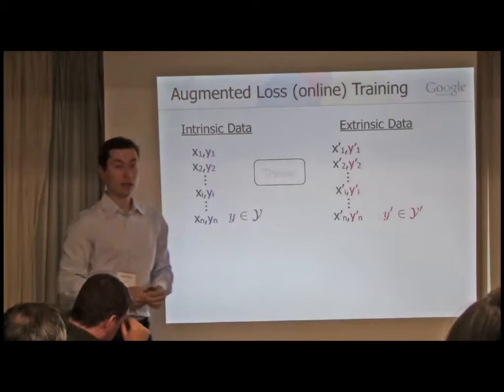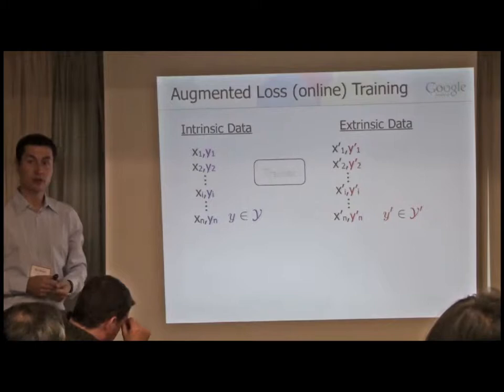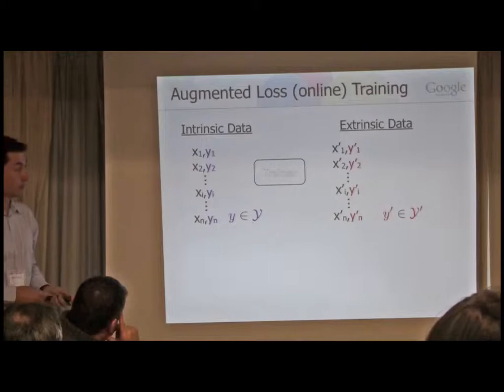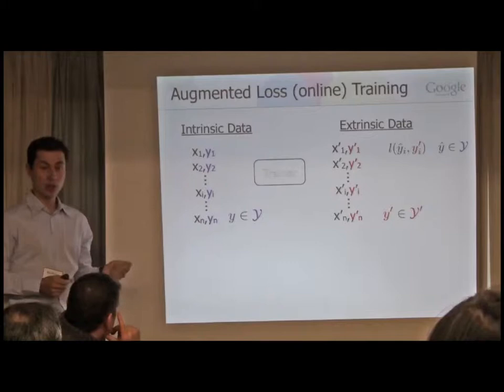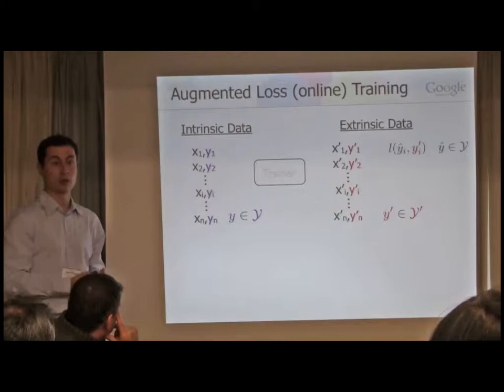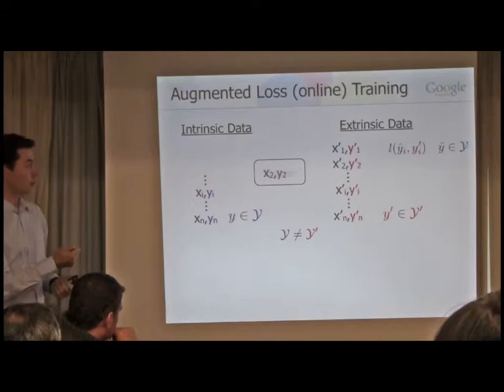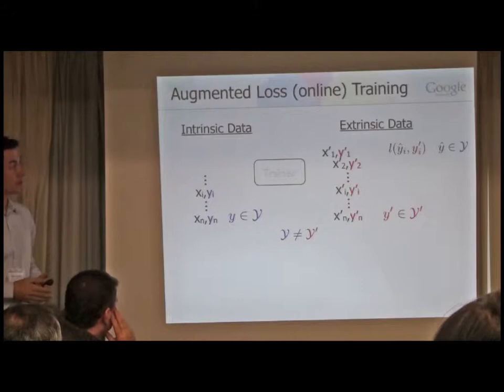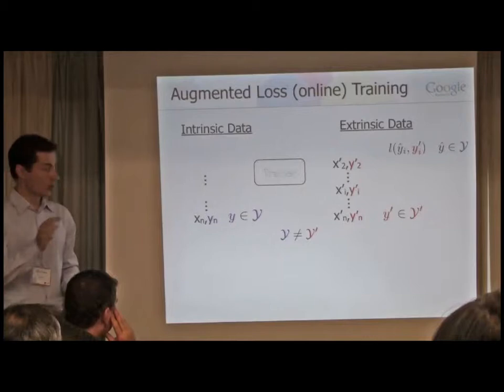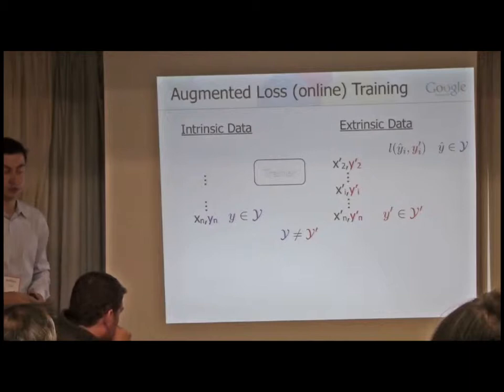We also consider a scenario with additional extrinsic data that has no overlap with intrinsic data, and where the output space Y-prime is different — it can be over partially annotated trees, reordering data, or machine translation data. We assume a loss function that, given the model prediction, can compute the loss relative to the target Y-prime. We iterate over intrinsic data to get a warm start, then mix in extrinsic data according to some scheme, and can include multiple loss functions in the extrinsic datasets.